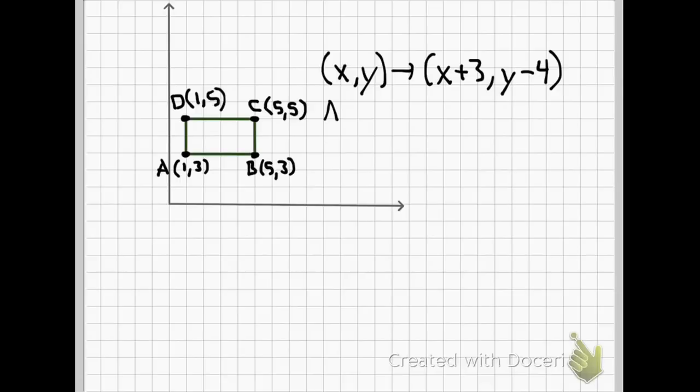Let's do that. A was one, three. If I plugged that in, I would get one plus three, and three minus four, which would give me that a prime, the image, is going to be the coordinates four, negative one. Let's put that there: four, negative one, a prime.